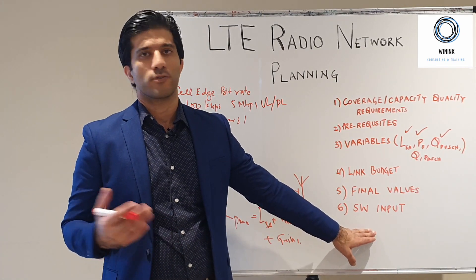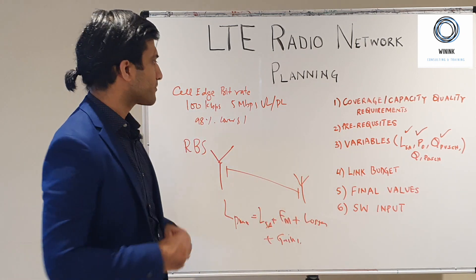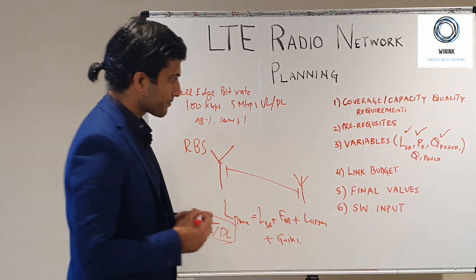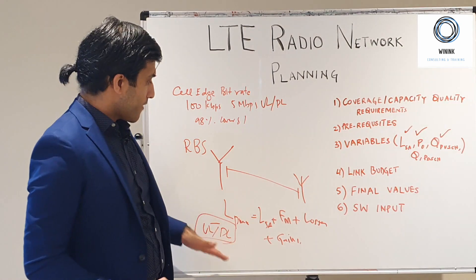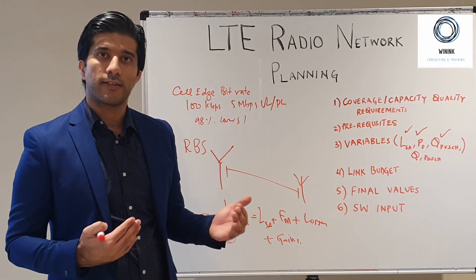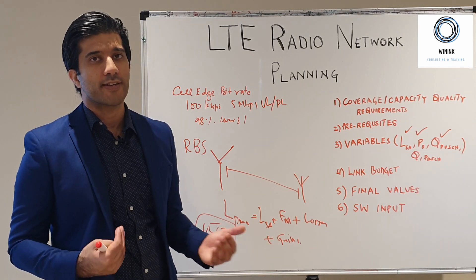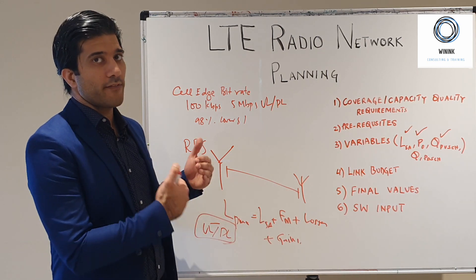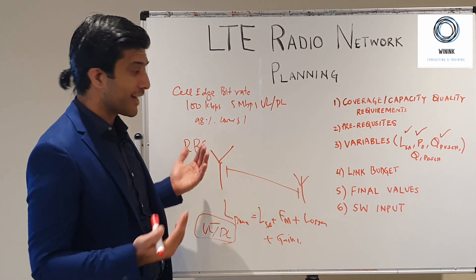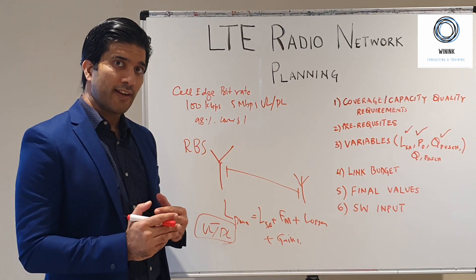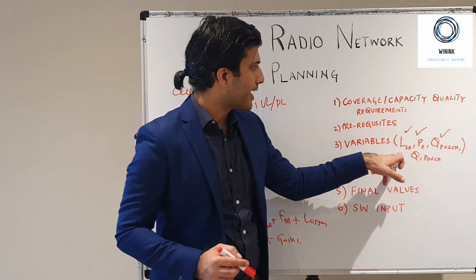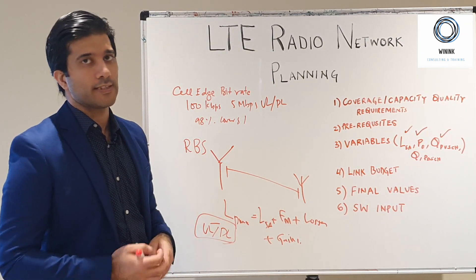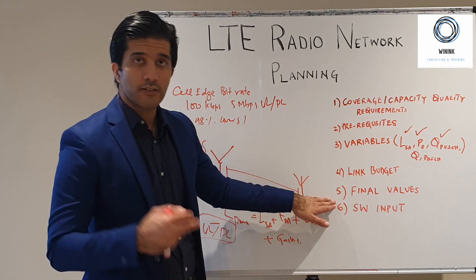The link budget will be computed for both uplink and downlink. Once we have the link budget, we will know whether our network is downlink-limited or uplink-limited. Most of the time the network is uplink-limited, meaning the path loss in the uplink is greater than in the downlink. If you find that the network is downlink-limited, you go back to the variables — LSA, P0, and load percentage — optimize them, and arrive at another set of values.